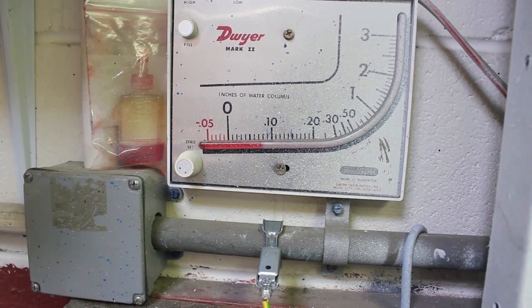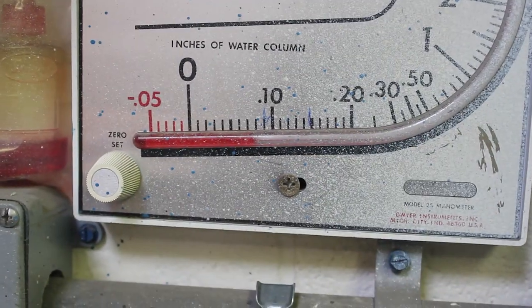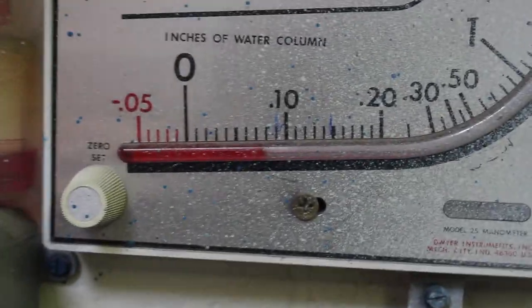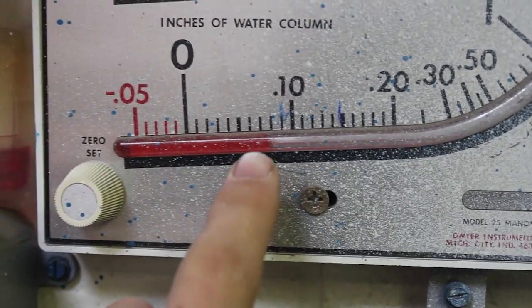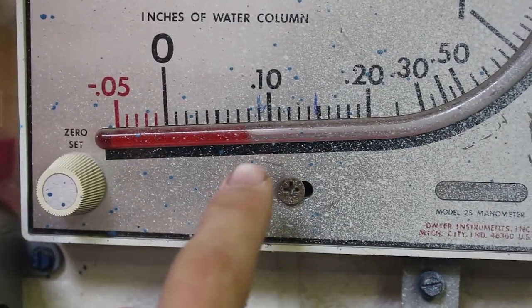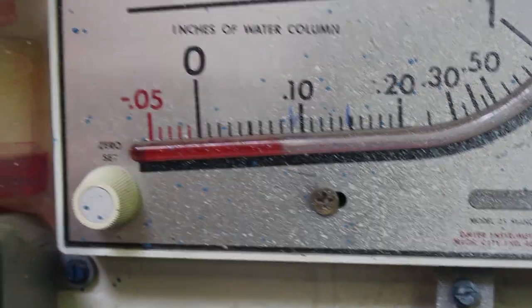Now my paint booth is running and you'll see that my resistance on my filters has increased and the spot that that is at would be considered the clean benchmark. Usually you can notify that with a little green arrow or green mark or even just a simple sharpie mark.